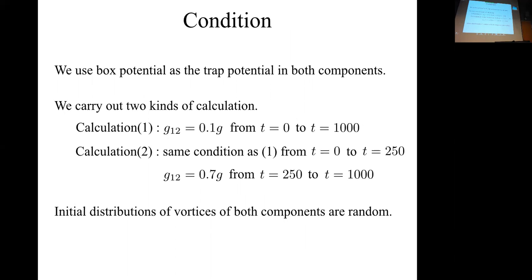Next I explain the conditions of my calculations. We carry out two kinds of calculations. In calculation one, we take G12 equal to 0.1G, so a weak inter-component interaction, from t equals 0 to t equals 1 star, where t is the normalized time. In calculation two, we also take G12 equal to 0.1G from t equals 0 to t equals 250.